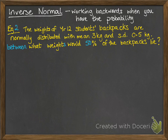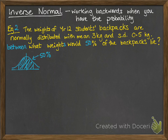We're going to change this question for example number two, just ever so slightly. Same situation, but we're looking for the weights where 50% of the backpacks lie between those weights. So it looks like this: we've got two weights either side of the mean, and 50% of the backpacks sit in between. On the graphics calculator, now the tail is not on the right or the left — we are between two values, so you call that center.